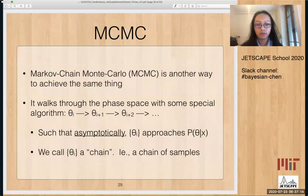And practically, what it does is that it has a chain of samples. So it goes through the phase space with some special algorithm. So it picks a point in the parameter space, and then it tries to follow some algorithm to go pick out the next point. And then from the next point, they pick out the next one, and so on and so forth. And asymptotically, this set of samples will approach the desired distribution that we want. And for a bit of jargon, we call this collection of samples a chain, and it's basically just a chain of samples.